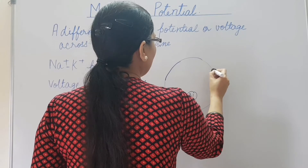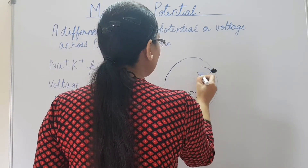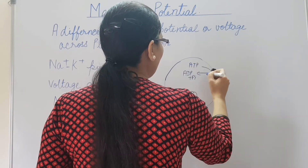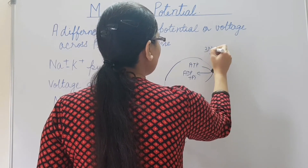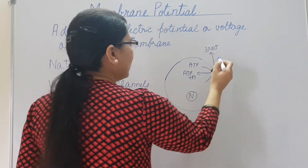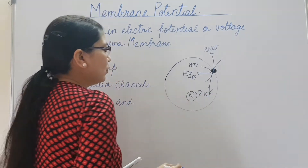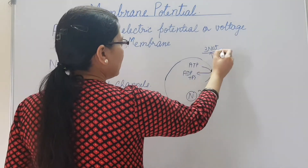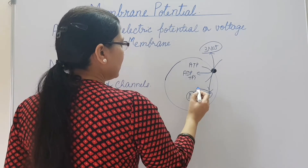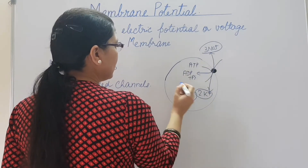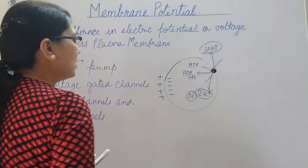This is the sodium-potassium pump. It hydrolyzes ATP and uses its energy to pump three sodium ions outside the cell and two potassium ions inside the cell. So there is more positive charge outside compared to the inside. Hence, inside it is negative and outside it is positive. In this way, the membrane potential is established.